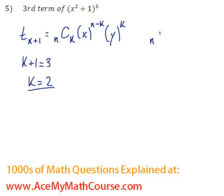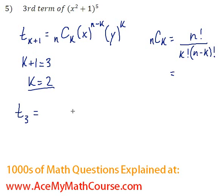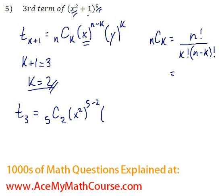Remember that n choose k is just n factorial all over k factorial times n minus k factorial. So let's start plugging things in. The third term would be equivalent to 5C2, because n is 5 and k is 2, times x squared — which is our first term — to the power of n minus k, times the second term, which is 1, to the power of k.